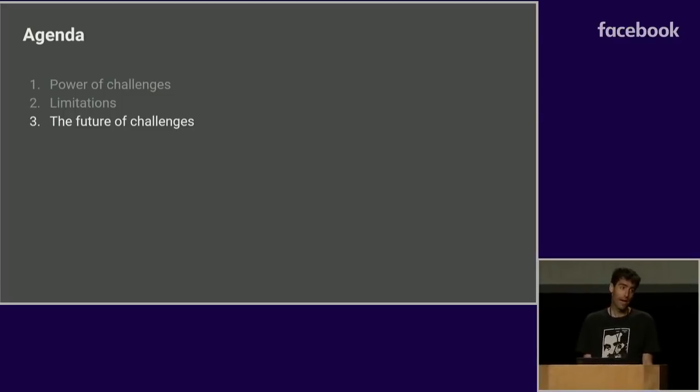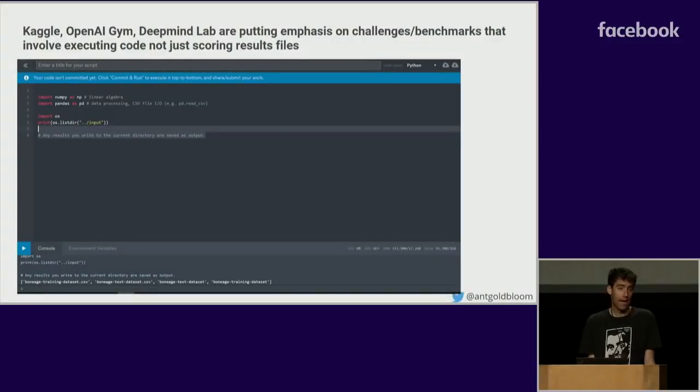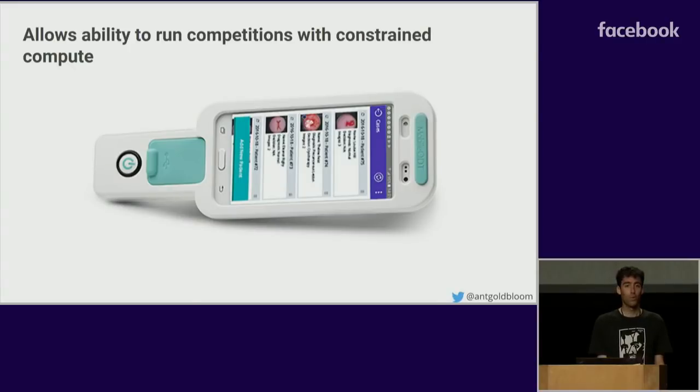So, I've highlighted some of the limitations. Kaggle and others are working hard on diminishing those limitations and making competitions even, they've had a huge impact, even more impactful. And so I wanted to end off with just a quick overview of some of the things that you can see coming. So you can see Kaggle, but also OpenAI, GYM, DeepMindLab are putting a lot of emphasis on challenges or benchmarks that involve executing code, not just scoring results files. So this is the screenshot I'm showing now is our cloud-based editing environment called Kaggle kernels. This allows you to, you code in Kaggle in Python or R, and you can have a GPU or a CPU and lots of customizations possible. And you hit run, and the code runs on servers on our machines, on Google's machines in Google Cloud. And so this is a very powerful new way to start running competitions. It has lots and lots of advantages.